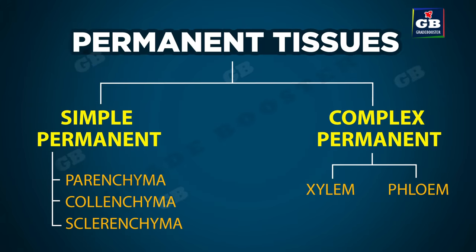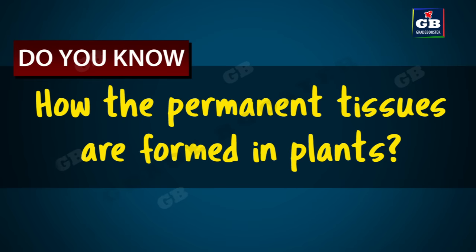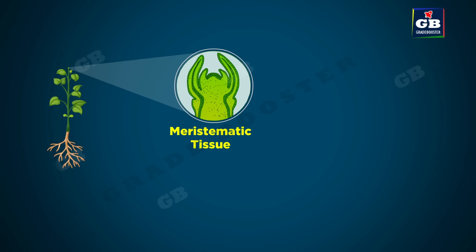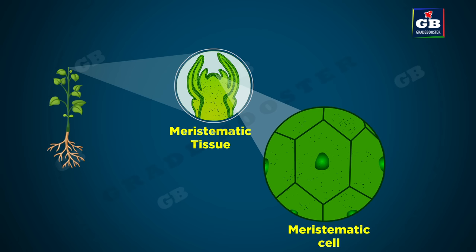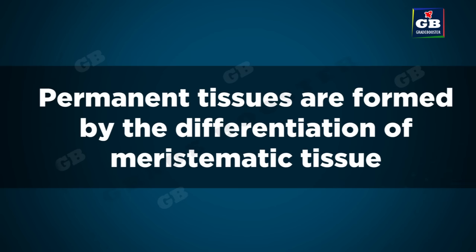Now let us learn about permanent tissues in plants. Meristematic tissue is the dividing tissue — the cells of meristematic tissue divide continuously. If these cells stop dividing, they take up a specific shape and a specific job and form the permanent tissue. So permanent tissues are formed by the differentiation of meristematic tissue.